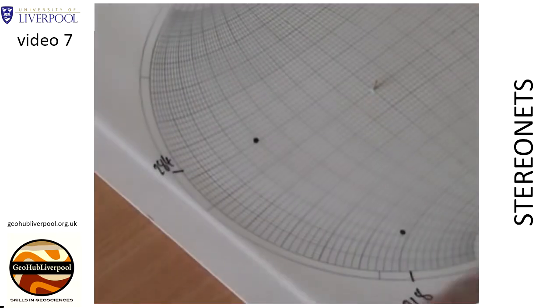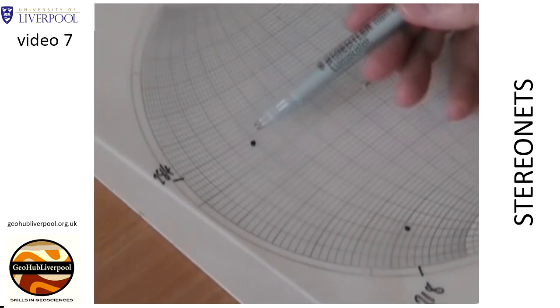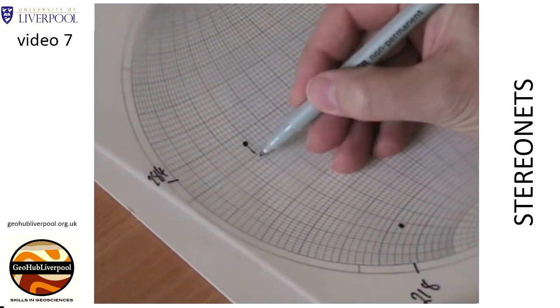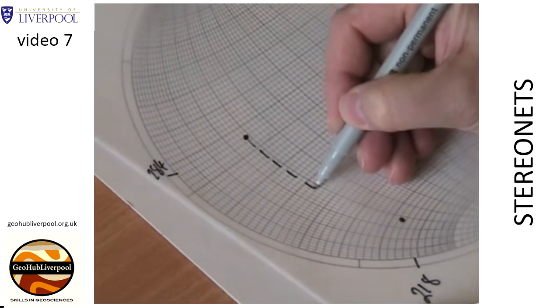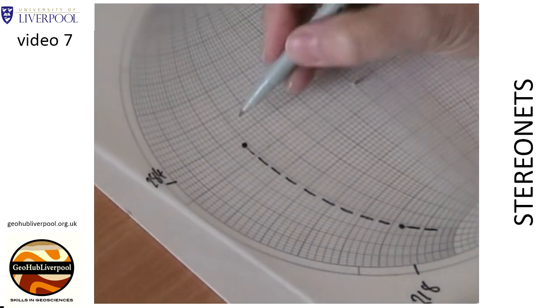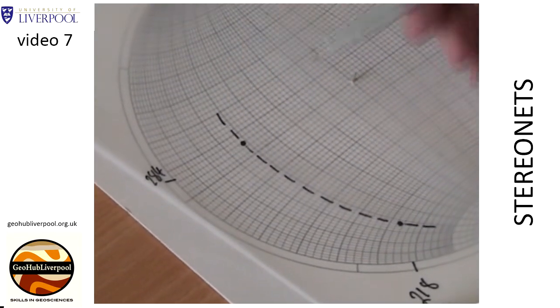Rotate the tracing paper until the two plots lie on the same great circle. Draw a dotted line along the great circle between the two points and count the small circles to determine the angle between the lines.